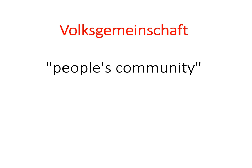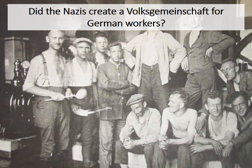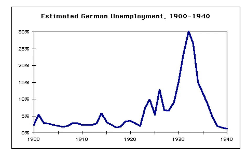In this video I'd like to look at: did the Nazis create a Volksgemeinschaft for the German workers? Did they improve the lives of German workers or not? If you look at this graph, it really tells one of the big stories. The Nazis took power in 1933, and you can see that in 1933 unemployment was absolutely through the roof in Germany — just over 30% of the German people were unemployed. That figure is incredible.